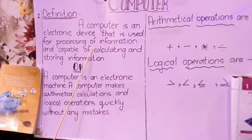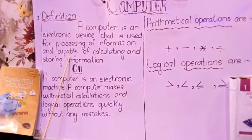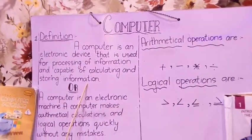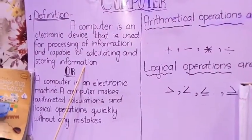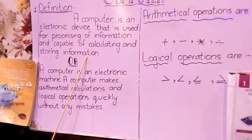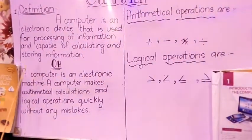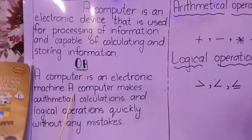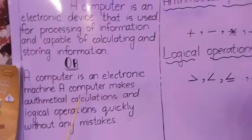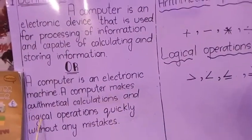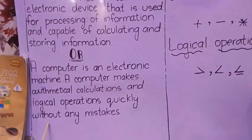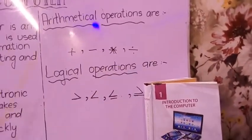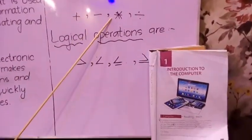Definition of computer: A computer is an electronic device that is used for processing of information and is capable of calculating and storing information. With the help of a computer you can find information and reuse it for different operations. Another definition: a computer is an electronic machine.